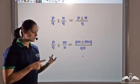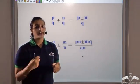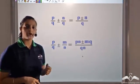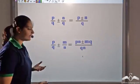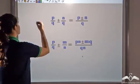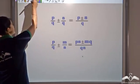So we have seen addition and subtraction. Now what about multiplication? How do I multiply rational numbers? Let's look at this.